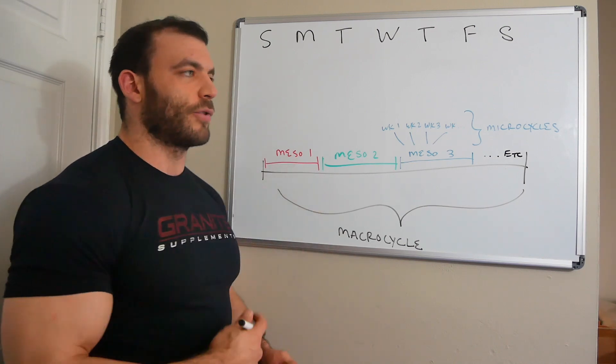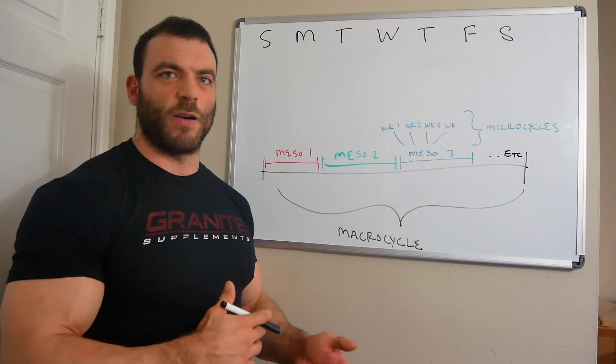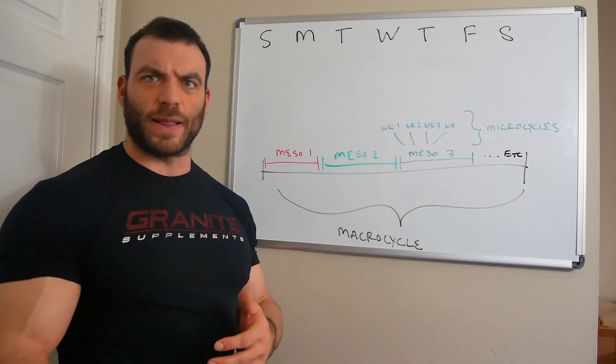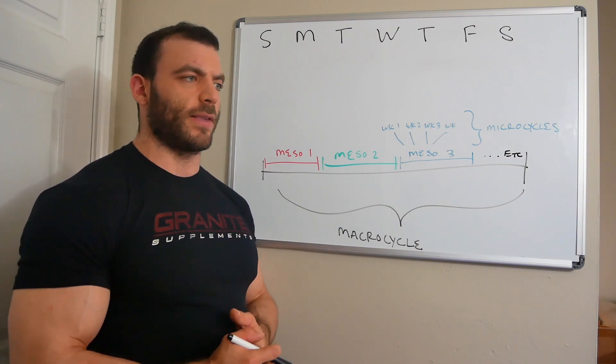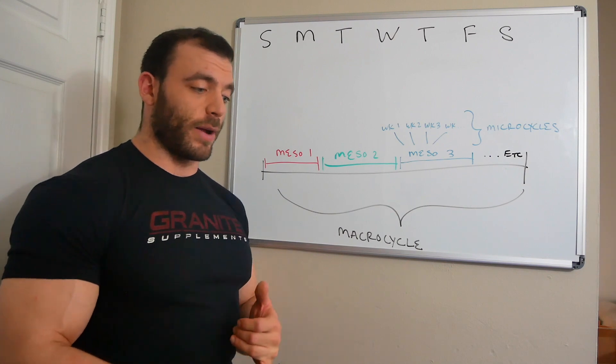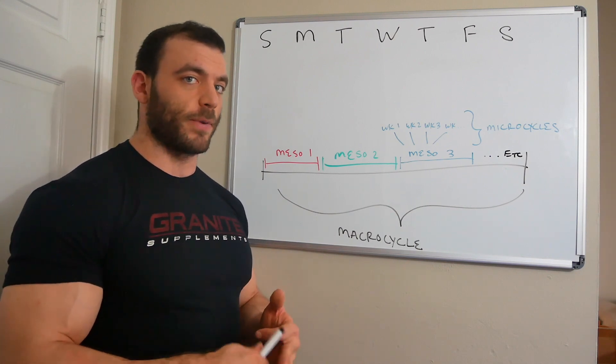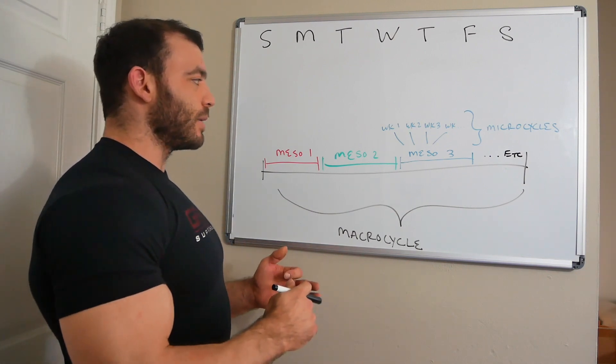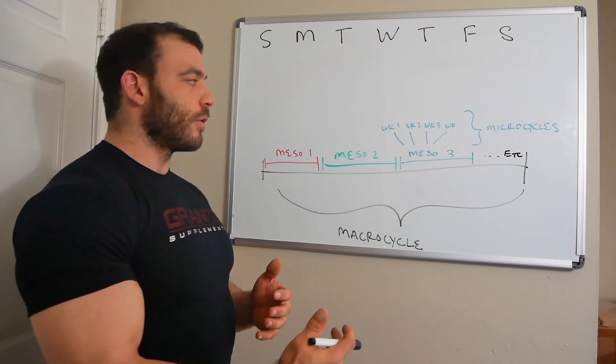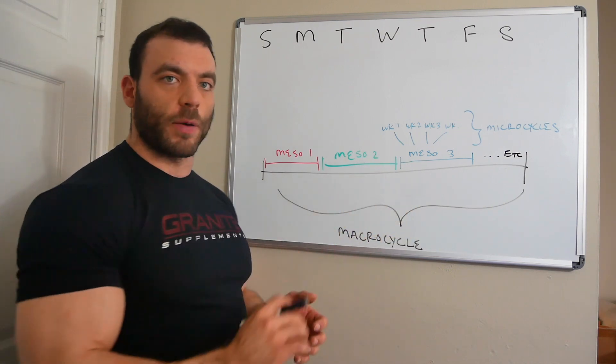You can think of a mesocycle as your traditional program - your 12, 16, maybe a little bit more, maybe a little bit less, but 12 or 16 weeks that you're actually writing down. Here are my exercises, here are my sets, here are my reps. And go from there. So where you actually go from here is what we're going to talk about today, and that's a micro cycle.